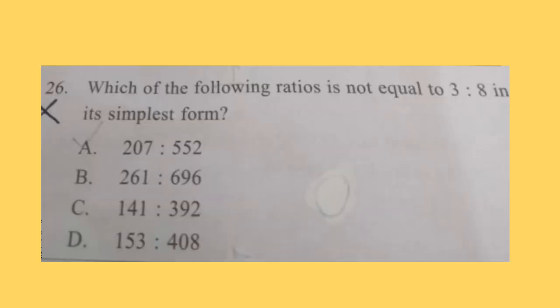Question 26: Which of the following ratios is not equal to 3 is to 8 in its simplest form? Three options are having ratios 3 is to 8. Only one is having not 3 is to 8, and you have to find that. That is the answer. Correct answer is option C, 141 is to 392.